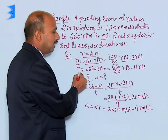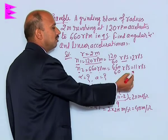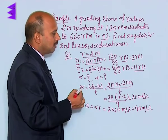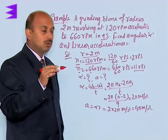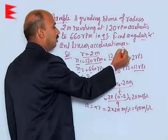Similarly, n2 we can get 660 revolution per minute, so 660 divided by 60 that is 11 revolution per second. So we have converted number of revolutions into n per second. Now we have to calculate alpha and a as given in the question.